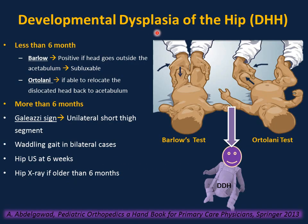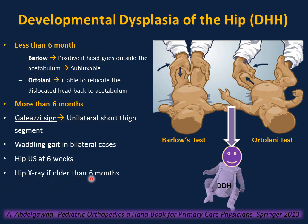Developmental dysplasia of the hip can cause limping, waddling gait, hip pain, and early arthritis if not detected and treated early. Detection is done in infants less than 6 months by performing Barlow and Ortolani tests. The Barlow test is positive if you feel a clunk and are able to dislocate the reduced hip — known as subluxable. Ortolani is the opposite: if you are able to relocate the dislocated head back into the acetabulum and feel a clunk, that is positive. In children older than 6 months with unilateral hip dysplasia, Galeazzi's sign will be positive, indicating a unilateral short thigh segment. In bilateral cases when they start to walk, there will be a waddling gait. Hip ultrasound is the imaging study of choice from 6 weeks of age; hip X-ray is beneficial only if the infant is older than 6 months due to ossification of the femoral head.